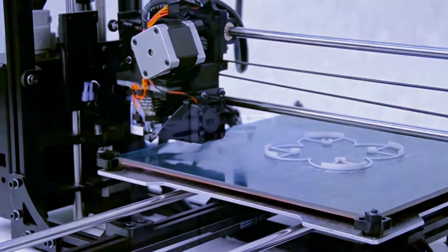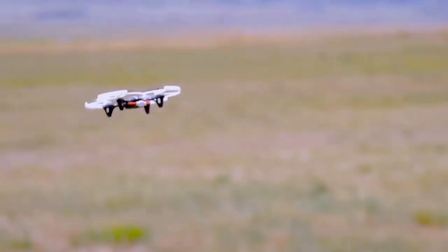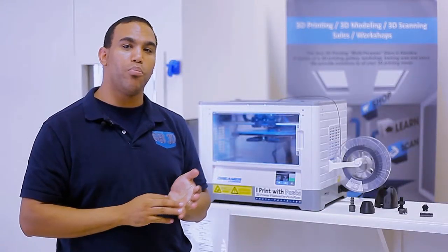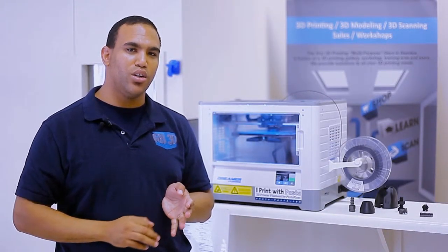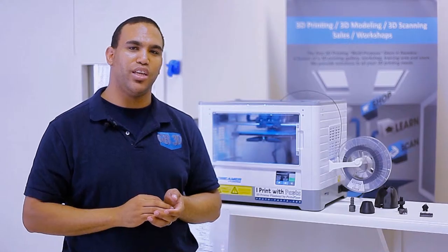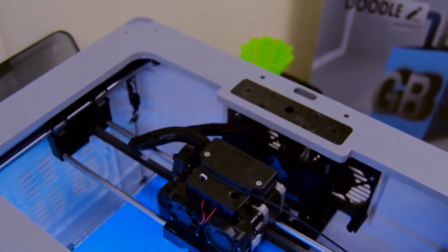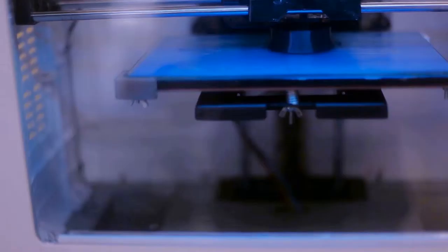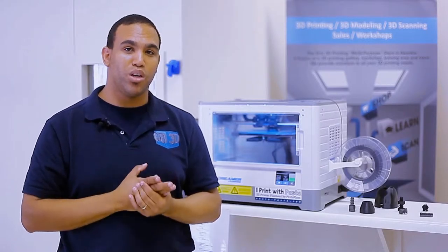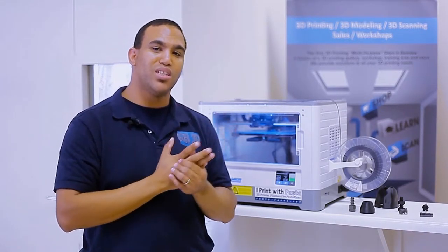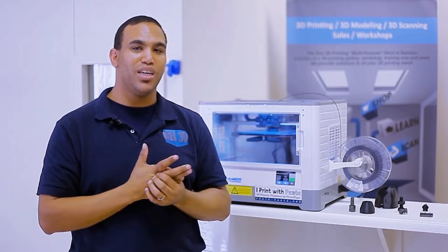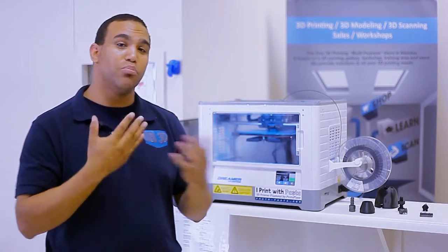There are other materials that you can also print with. There's copper filament that you can use, brass filament that you can use. There's some materials you can actually print with aluminum as well, so there are a lot of different composites. There's about 127 different types of material on the market that you can actually print with.